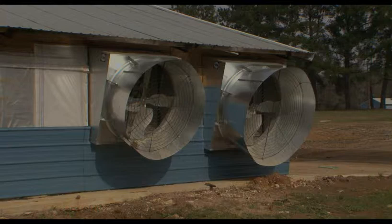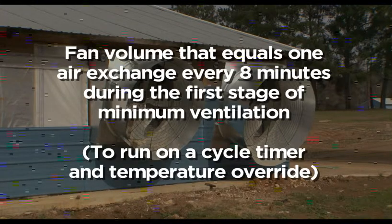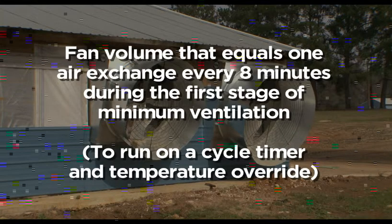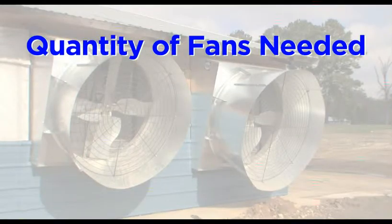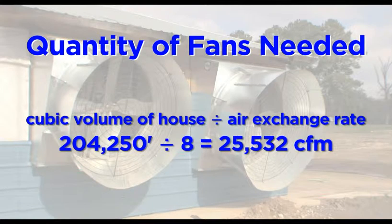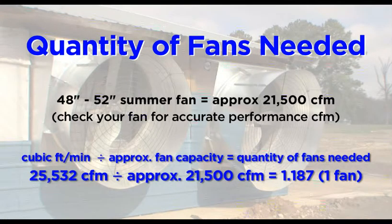First we need to determine the number of fans needed at actual working pressure — first stage. Fan volume equals 1 air exchange every 8 minutes during the first stage of minimum ventilation, to run on a cycle timer and temperature override. To determine the number of fans needed, take the cubic volume of the house and divide by 8, the air exchange rate every 8 minutes. Then divide by the volume of air one summer fan can displace. In this example, one summer fan can displace 21,500 cubic feet per minute.